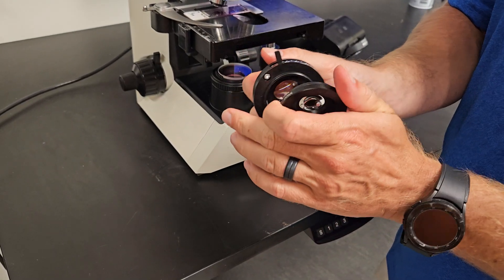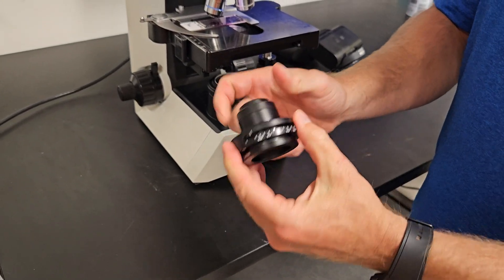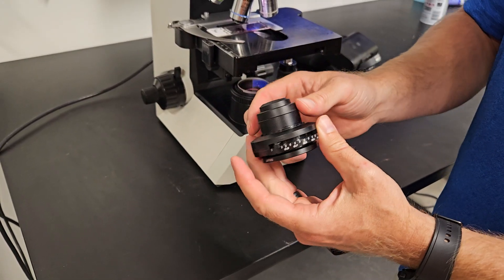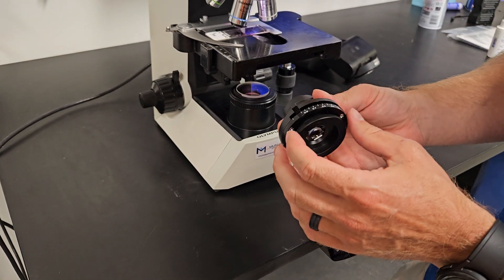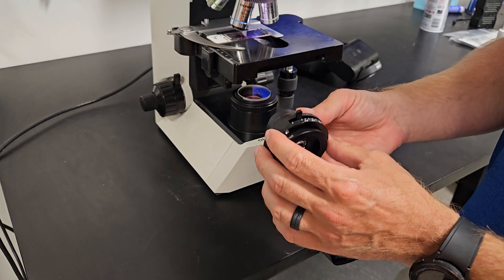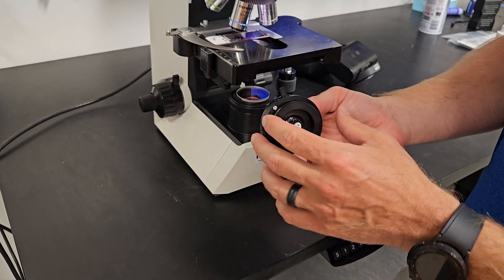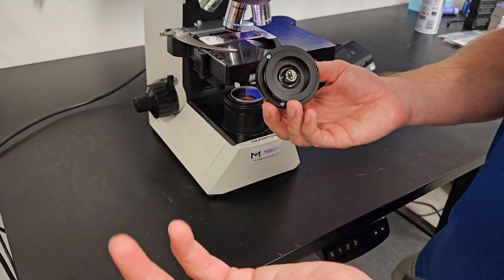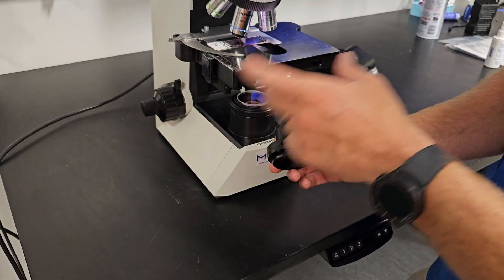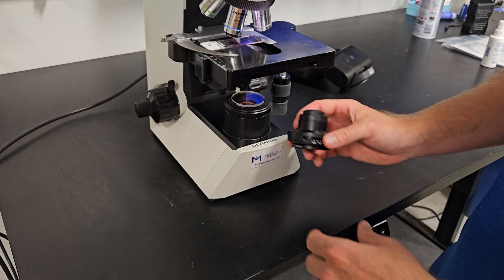You might see a cassette style condenser. It's going to have another position out here like this, and you can slide it back and forth, and it'll have a diaphragm built into one side. I like this one better. It's a lot easier to use for the pathologist. They don't really like sliding the cassette back and forth.